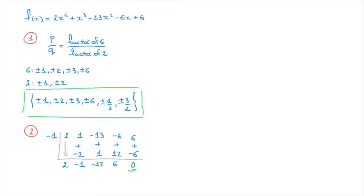Furthermore, the factor theorem also tells us that x - (-1), in other words x + 1, is a factor of this polynomial. So we can rewrite f(x) as (x + 1) times the quotient polynomial. Following synthetic division, the quotient polynomial is cubic with coefficients from the bottom of our table: 2x³ - x² - 12x + 6.